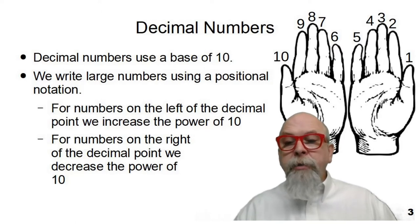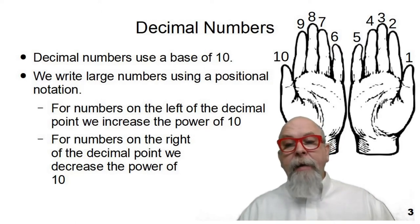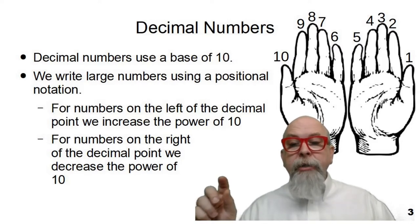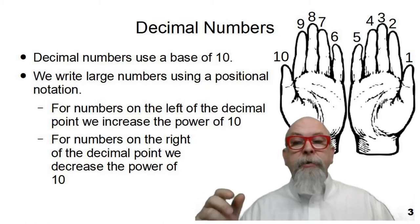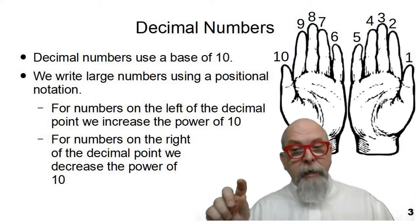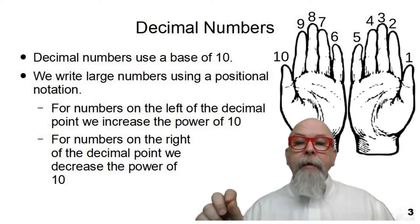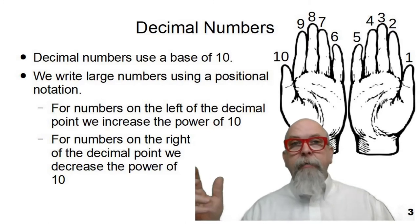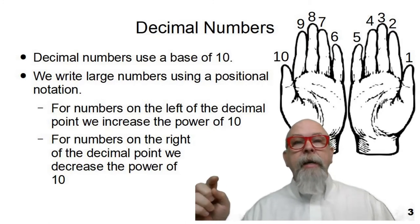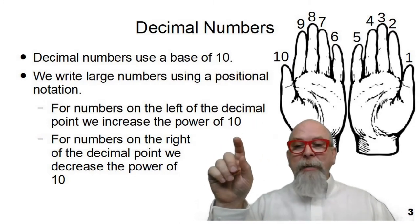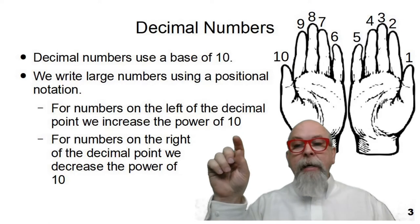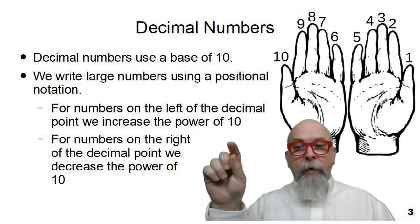The numbering system that most of us use in our day-to-day life is known as a decimal number, or a base 10 number. Each digit in a decimal number represents 10 different values, the numbers 0 through 9 for each individual digit. We write them using a positional notation where the leftmost digit, for instance, of an integer contains the smallest part, the smallest power of 10, 10 to the 0.